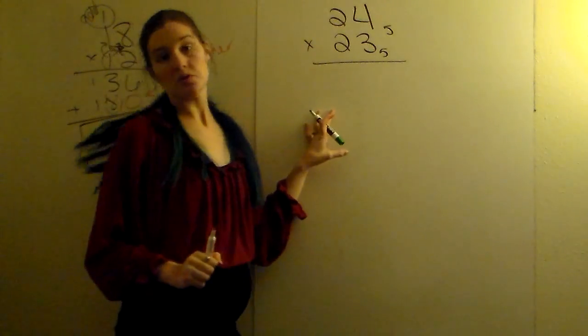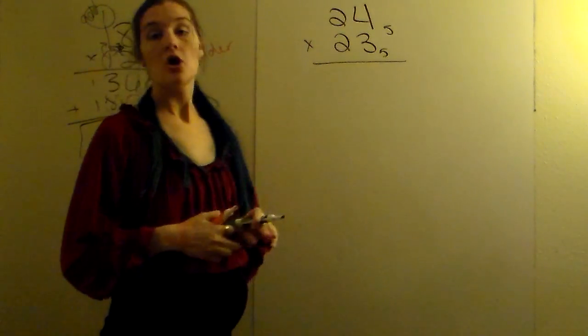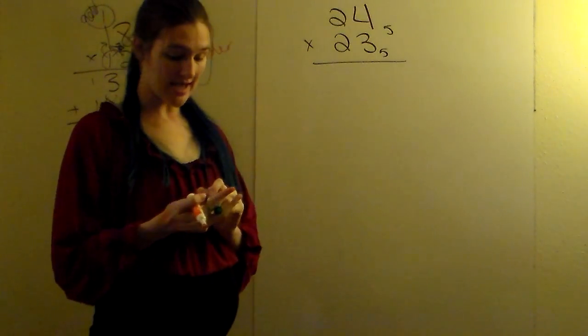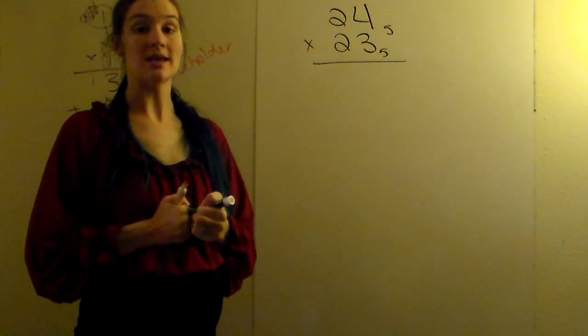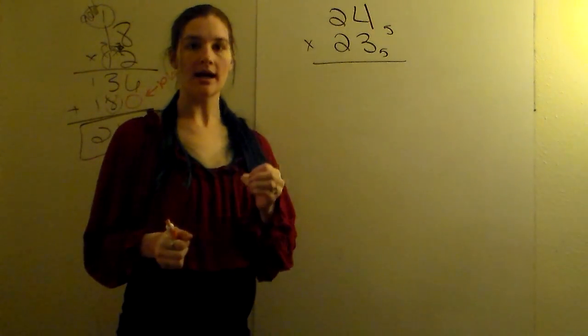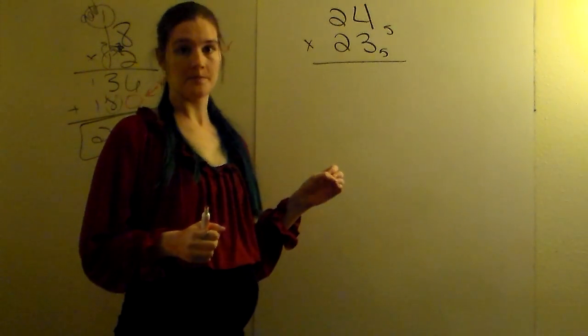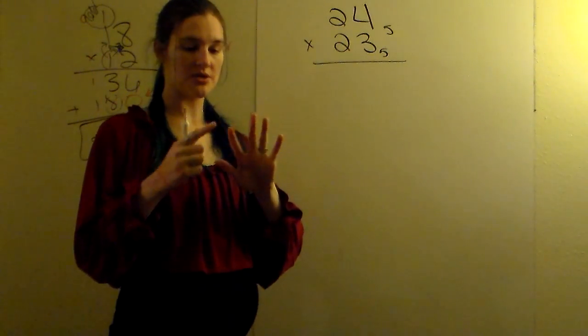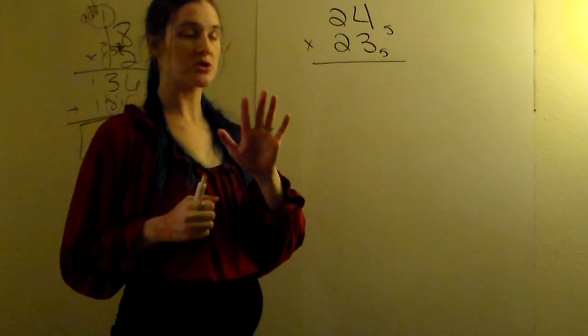So when we're doing 24 base 5 times 23 base 5, we're going to start off the exact same way. Just keep in mind what numbers are allowed in base 5. You're only allowed 0 through 4 in base 5. Five symbols: 0, 1, 2, 3, 4, always starts at 0.